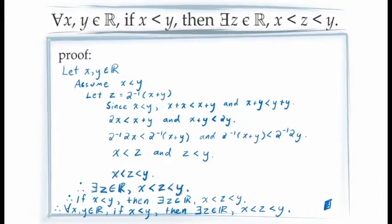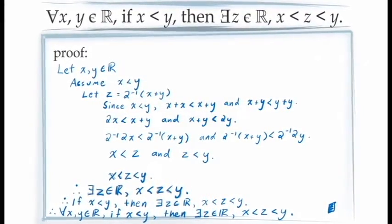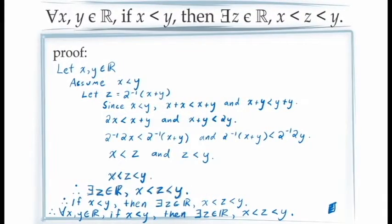In the last video, we started to see how all of our rules of logic — the principle of universal generalization, the principle of existential generalization, and the principle of conditional proof — can be nested within one another in order to prove fairly complicated-looking statements.